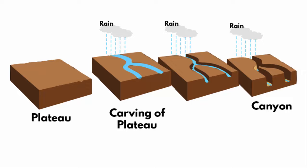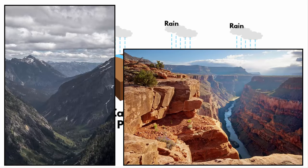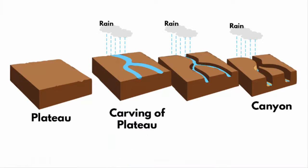By the way, canyons are formed not only by cutting a plateau — it also happens with mountains. That is how valleys are created. In a way, valleys are also like canyons. Both of them are formed through erosion, that is continuous wearing down of the land by wind and water.